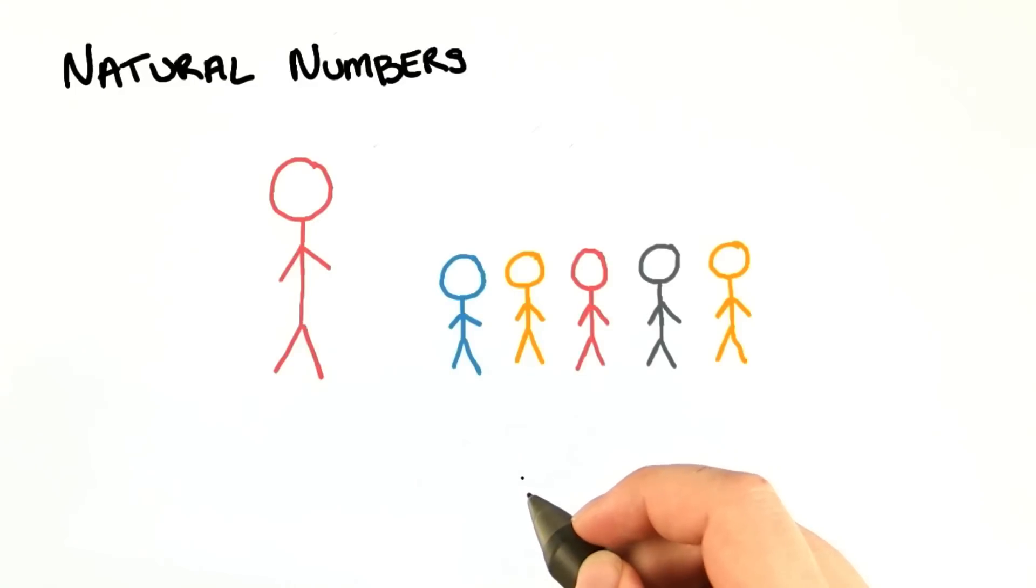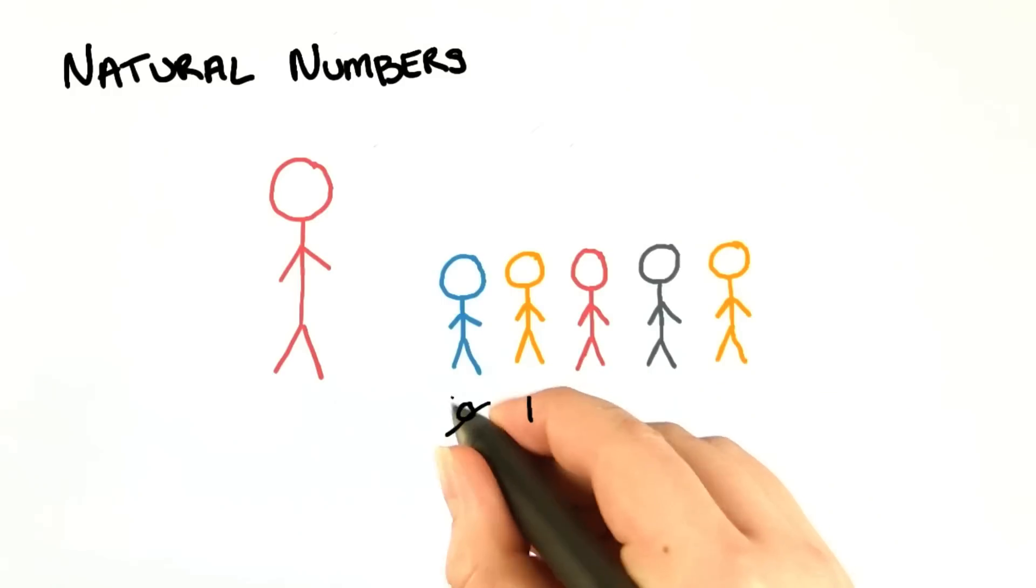Zero is not a natural number. For example, when we think back to the kindergarten teacher example, she does not start counting her children starting with zero. She begins with one.